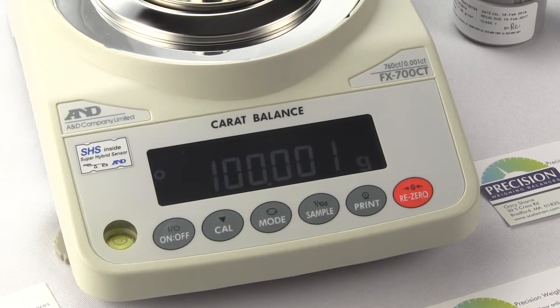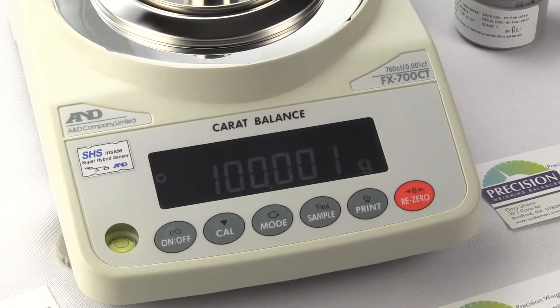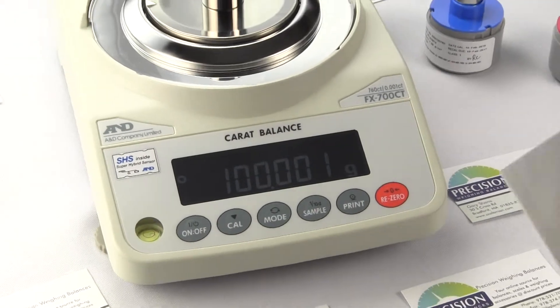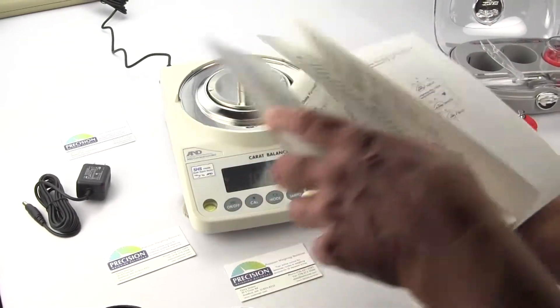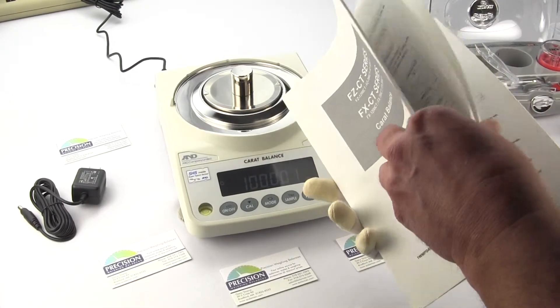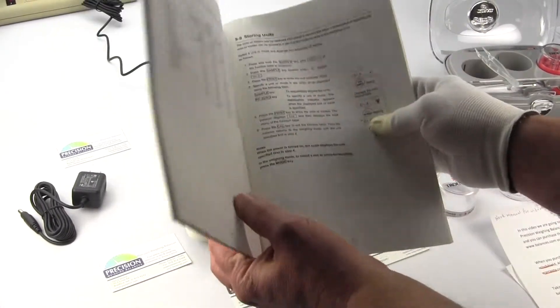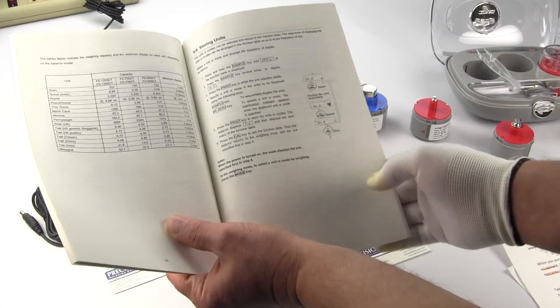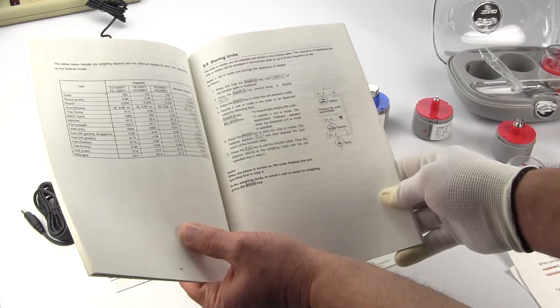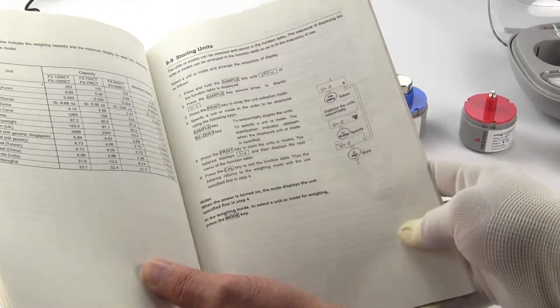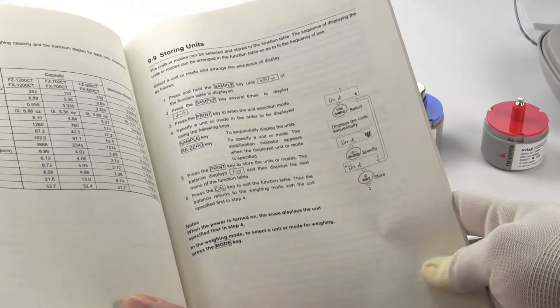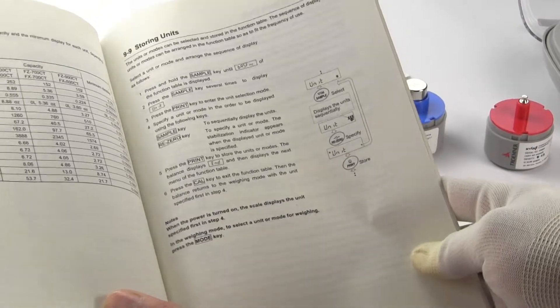The manual again will explain in clear details how to configure these weigh units. So in the manual on page 37 it gives you step-by-step instructions here on how to store multiple weigh units. The point I'm just trying to address is A&D offers a well-documented manual that most people can easily follow.